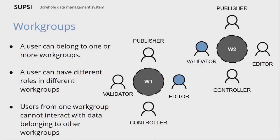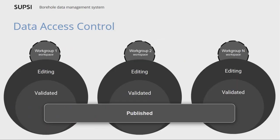The user belongs to different work groups. One user can be in more than one group, and a user can have different roles in every group. Users can only interact with data belonging to their work group, which means that until data are published, work group users can only view and manipulate data belonging to their work group.